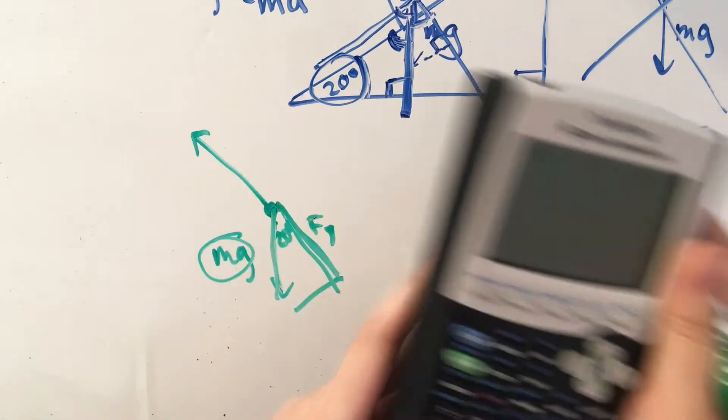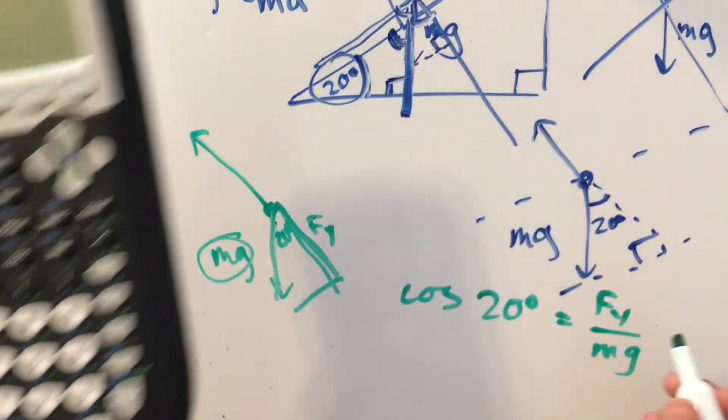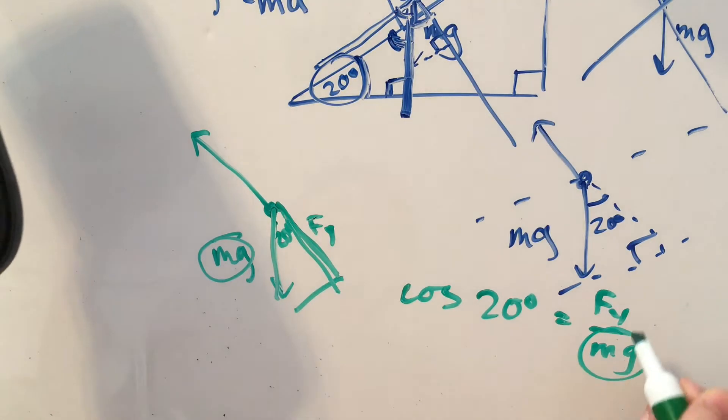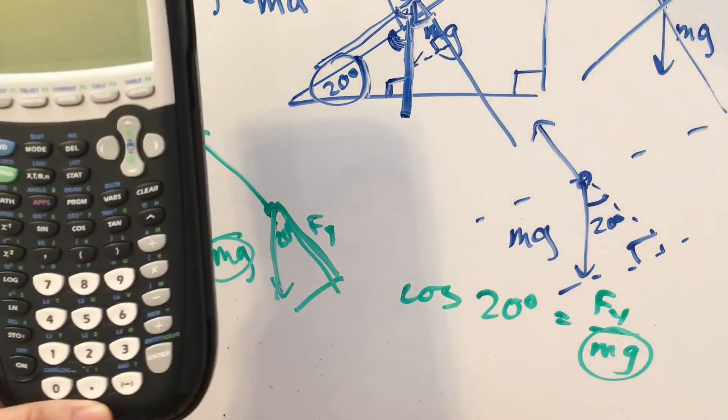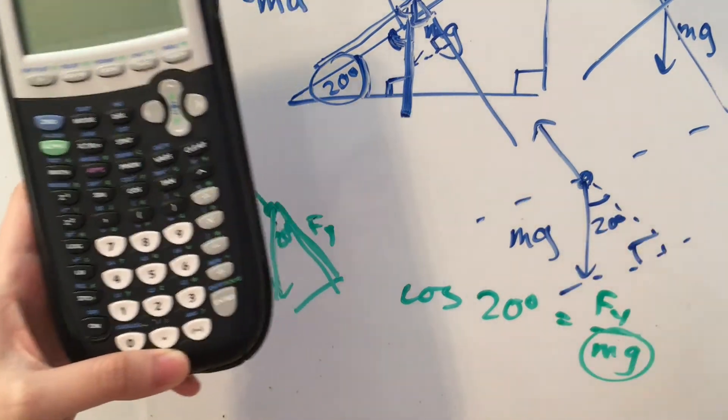So the cosine of 20 degrees is equal to the y component over our hypotenuse, which is mass times gravity. So we said that the mass is 5 kilograms, times 9.8, which is g. So we're going to have 49 be this.